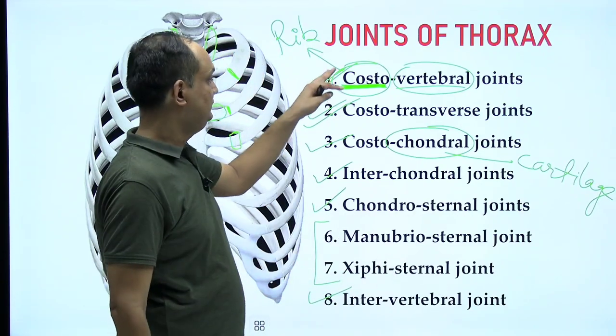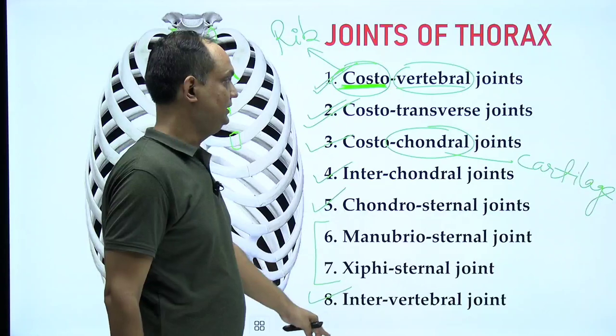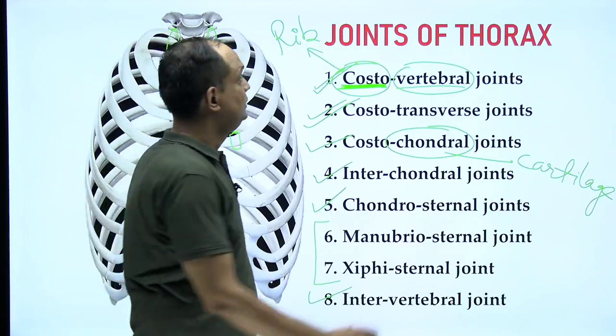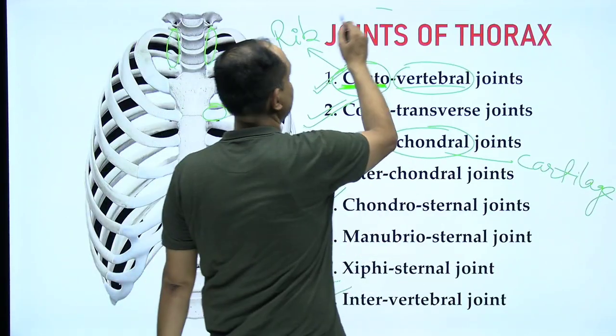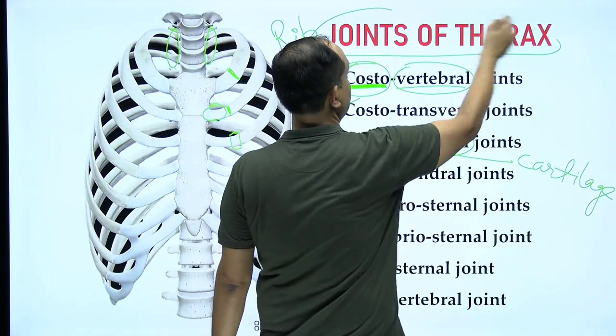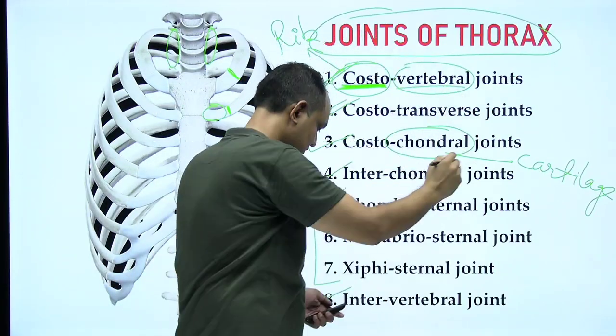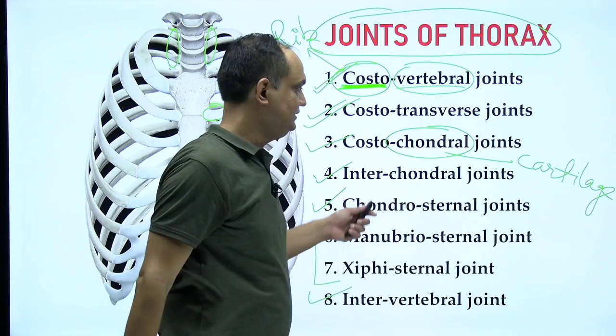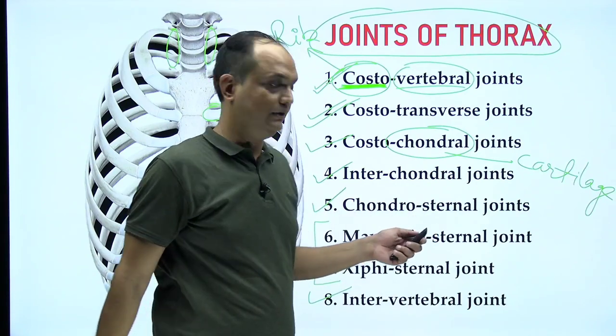So these are the joints known as joints of the thorax. Now we will see these joints one by one.